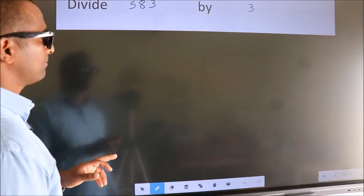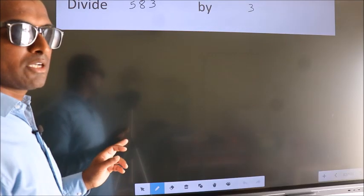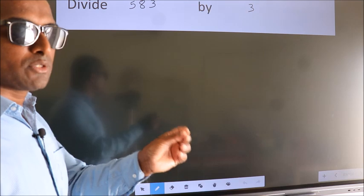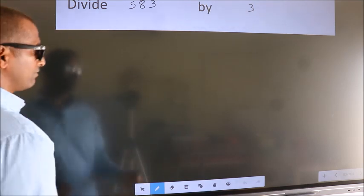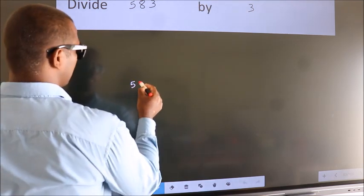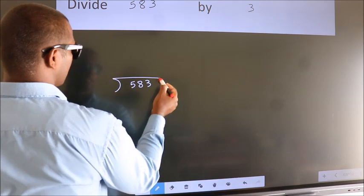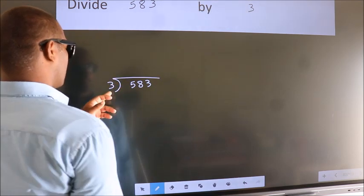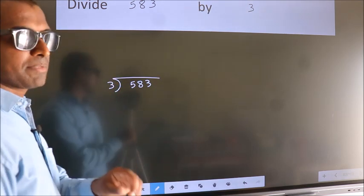Divide 583 by 3. To do this division we should frame it in this way: 583 here, 3 here. This is your step 1.